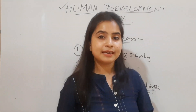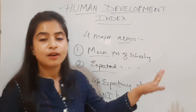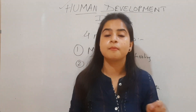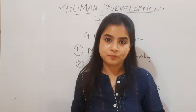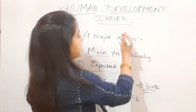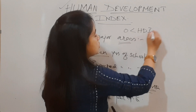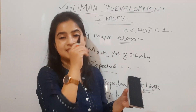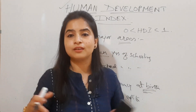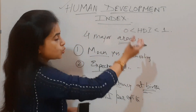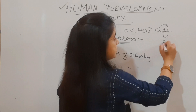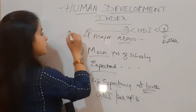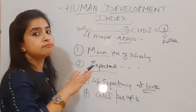HDI is a measure that helps in measuring the development of various countries over time, and the results are comparable. An important fact about HDI is that it lies between zero and one. Since it is a statistic, there is a bound: a value of one indicates a better position, while zero indicates the country's condition is low or not up to the mark.